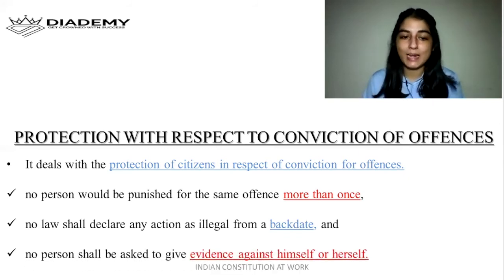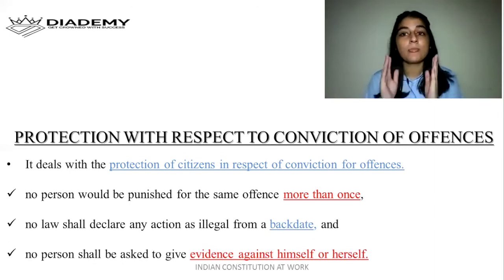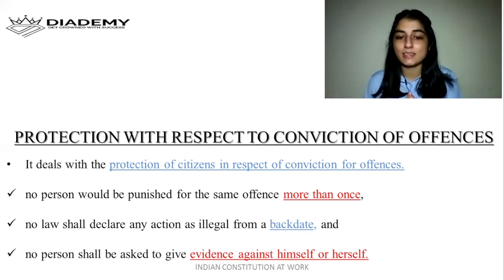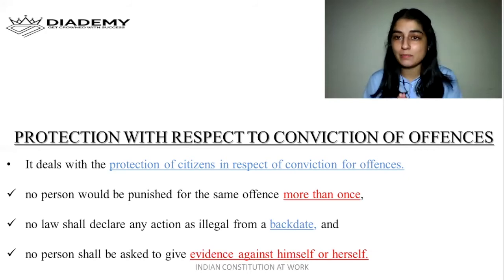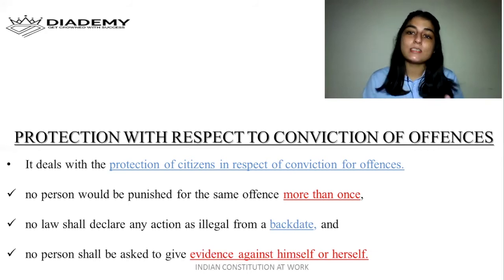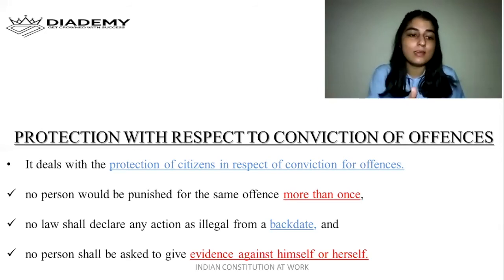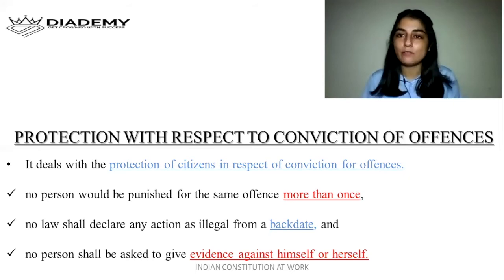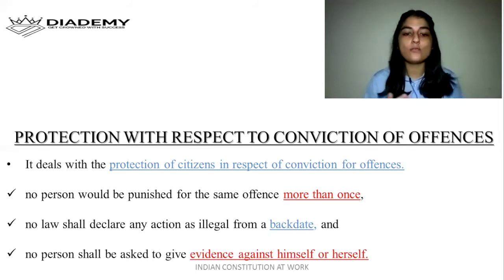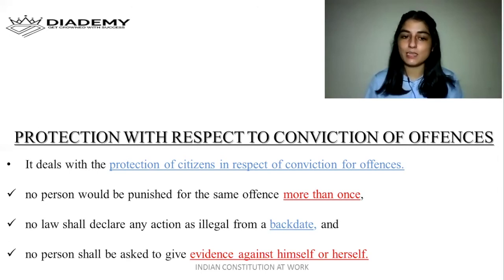Next is that no person shall be asked to give evidence against himself or herself. No convict can be forced to give evidence against themselves. However, if a convict is asked to provide a urine sample or blood sample, that does not come under this protection — that is not considered giving evidence. Only other types of evidence cannot be forced from a convict.